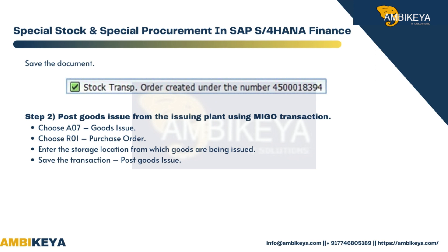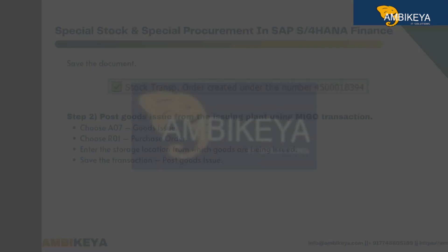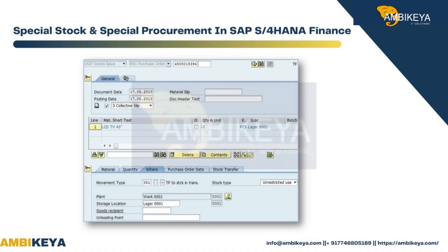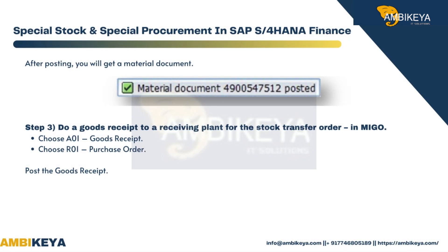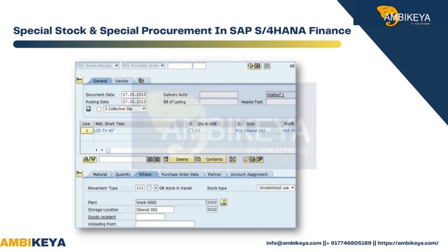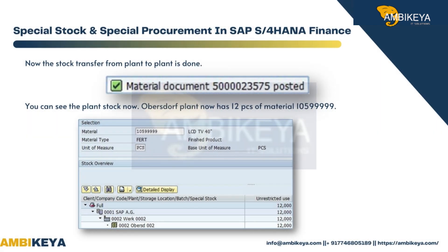Step 2: Post goods issue from the issuing plant using MEGO transaction. Choose A07 goods issue, choose our purchase order, enter the storage location from which goods are being issued, save and post goods issue. After posting you will get a material document. Step 3: Do a goods receipt to the receiving plant for the stock transport order in MEGO — choose A01 goods receipt, choose our purchase order, and post the goods receipt.